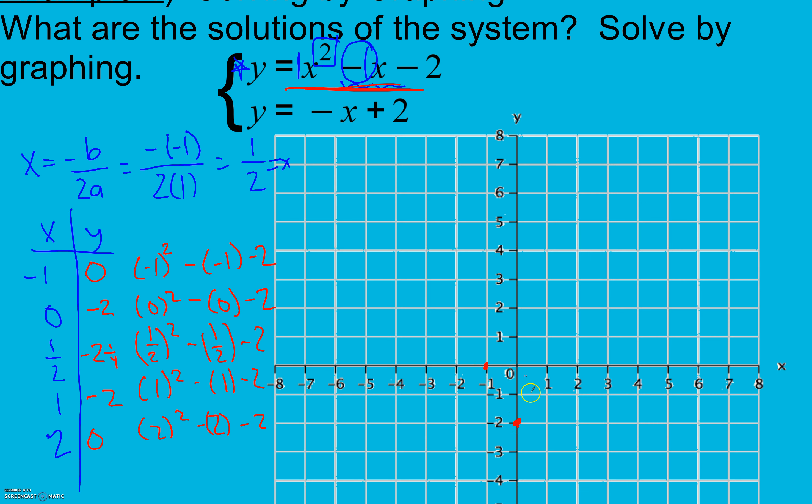So at negative 1, 0. And that's nothing new. We've done that all chapter. 0, negative 2. Half, negative 2 and a quarter. 1, negative 2 and 2, 0. I'm not going to connect these yet though because I want to see where my other line is going to be at. I want to make sure that I find where they meet exactly.